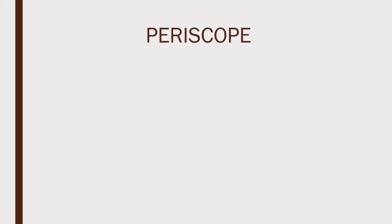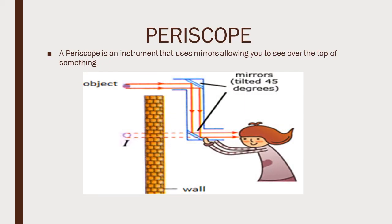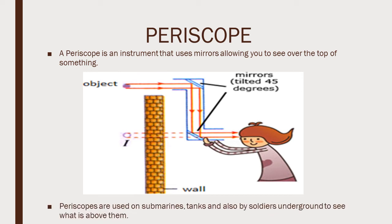Periscope. A periscope is an instrument that uses mirrors allowing you to see over the top of something. In the diagram that I have provided, a girl is viewing a ball which is above ground meanwhile she is below ground. The periscope is made up of two mirrors. The light from the object reflects off the first mirror, travels down a straight line, then reflects off the second mirror and directly into the girl's eye.